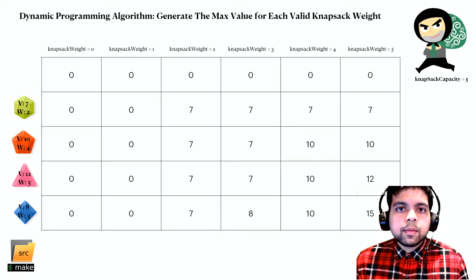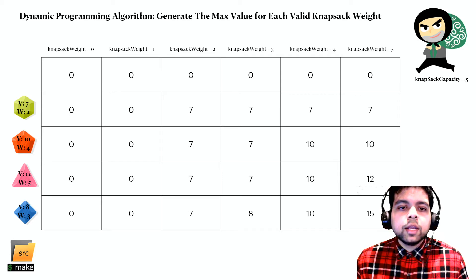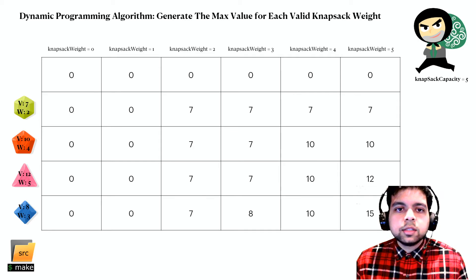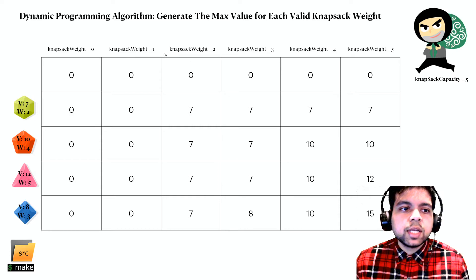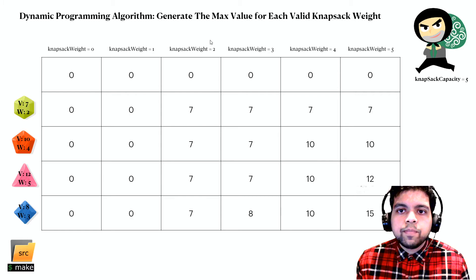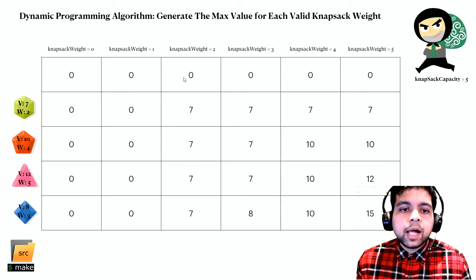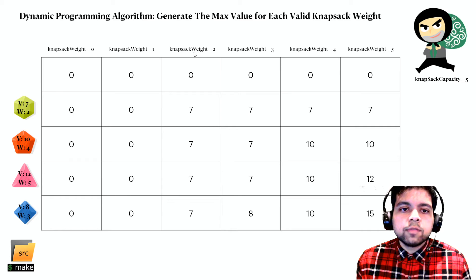That's how you solve this problem using dynamic programming. You generate an array that stores the best possible answers — a 2D array where each cell represents a certain valid knapsack weight and a certain item visited so far. The value of each cell is the maximum knapsack value achievable given that weight and item.